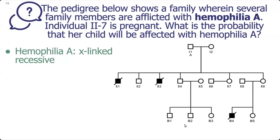The first thing to do is to remember that Haemophilia A is X-linked recessive. Next, mark the genotypes of those who have Haemophilia A on the pedigree.